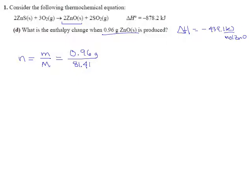So 0.96 divided by 81.41 tells us we have 0.011792 moles of zinc oxide.